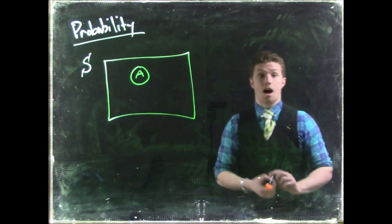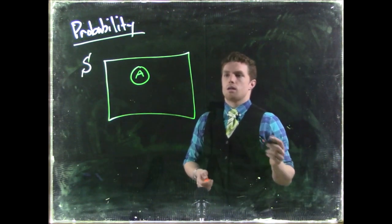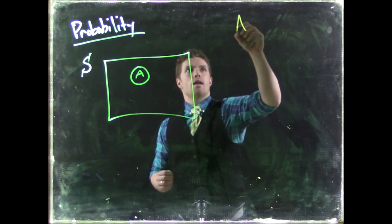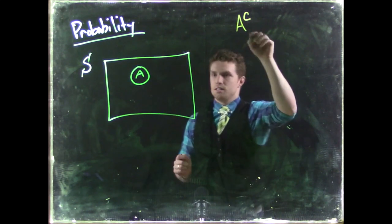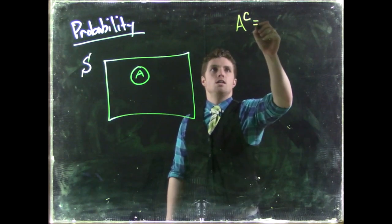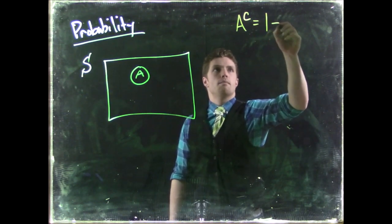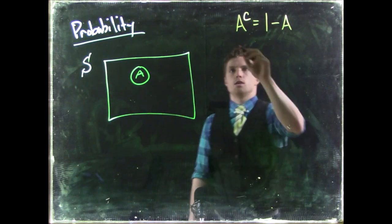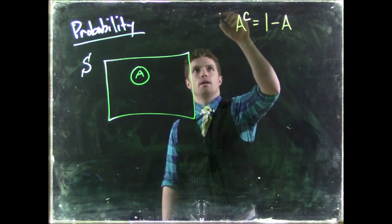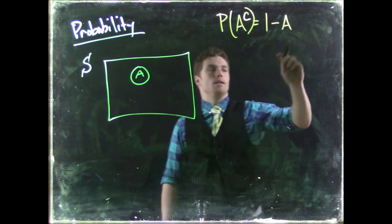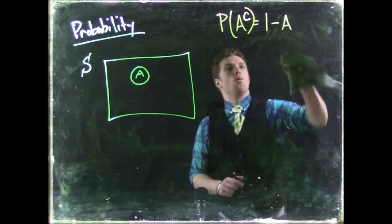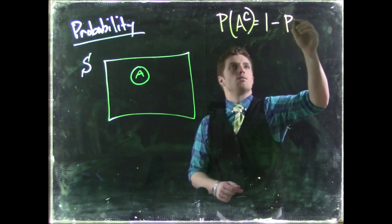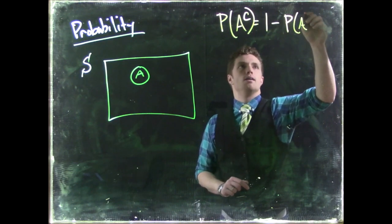So what we're going to talk about is a complement. So the complement, let me write this out. So A complement, it's A with this little superscript C, is equal to one minus A. Or, let me write this down a little better. We have the probability of A complement is equal to one minus the probability of A.